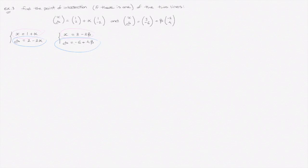That leads us to the following two equations: 1 plus alpha equals 3 minus 2 beta and 2 minus 2 alpha equals negative 6 plus 4 beta.